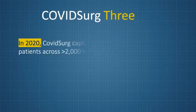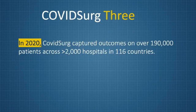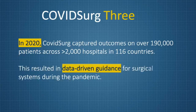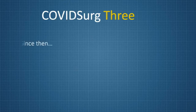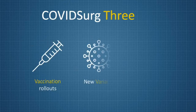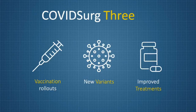In 2020, the COVID surge studies captured outcomes on over 190,000 patients from 116 countries. This allowed data-driven guidance for surgical systems during the pandemic. However, since then, we have seen vaccine rollouts, new variants and improved treatments for COVID-19.